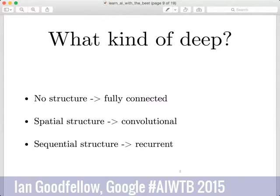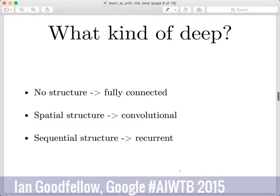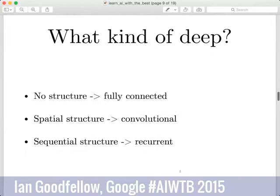Finally, if your data has sequential structure, you want to use a recurrent neural network — for example, if you have text where you want to read a long sentence and at the very end be asked a question about it, requiring you to remember something from very early in the sentence. There's a little overlap between sequential and spatial structure — you can think of time and space as somewhat interchangeable — so there is a judgment call about whether to use convolutional or recurrent networks.